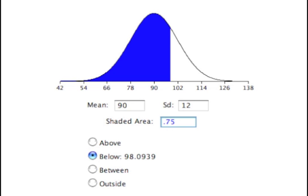The calculator calculate x for a given area works in reverse. For example, say you wanted to find the score corresponding to the 75th percentile of a normal distribution with a mean of 90 and a standard deviation of 12. You enter 90 for the mean and 12 for the standard deviation, then enter 0.75 for the shaded area and click the below button. The area below 98.0939 is 0.75.